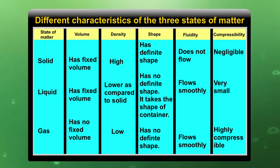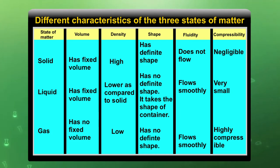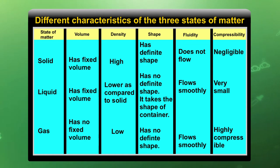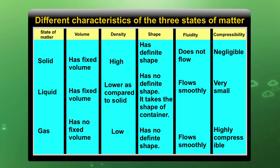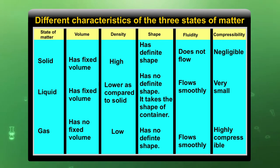In the case of gases, there is no fixed volume because gases are highly compressible. Density is very low because there is very large space between gas molecules. Gases have no definite shape — if kept in different containers they take the shape of that container. Gases flow smoothly and are highly compressible because the very large intermolecular spaces allow molecules to be further compressed.